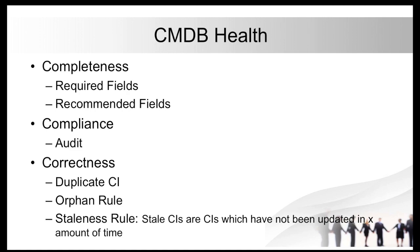For correctness, whenever a CI is created, it should not be duplicated. The same CI should not be created multiple times. Identification rules need to be written properly, and if any duplicate CI exists, it will be captured under correctness.